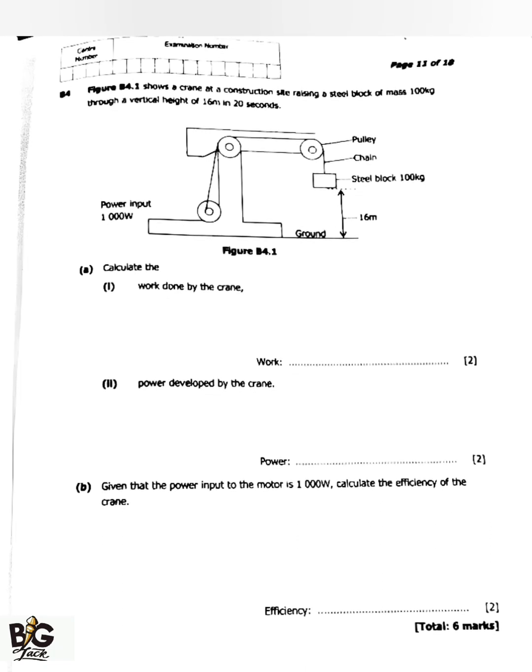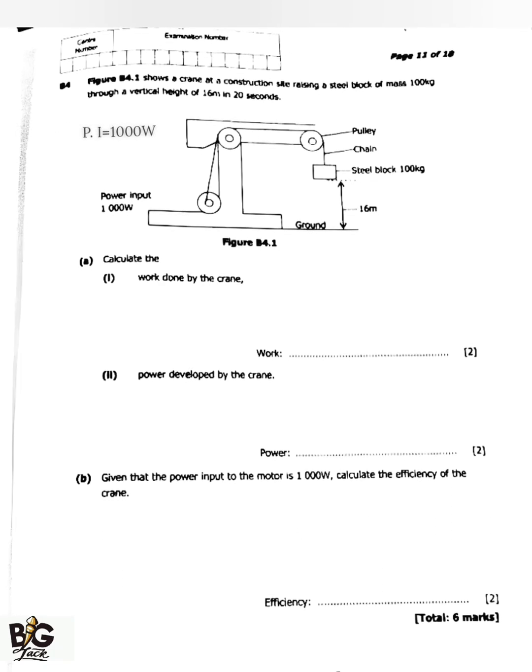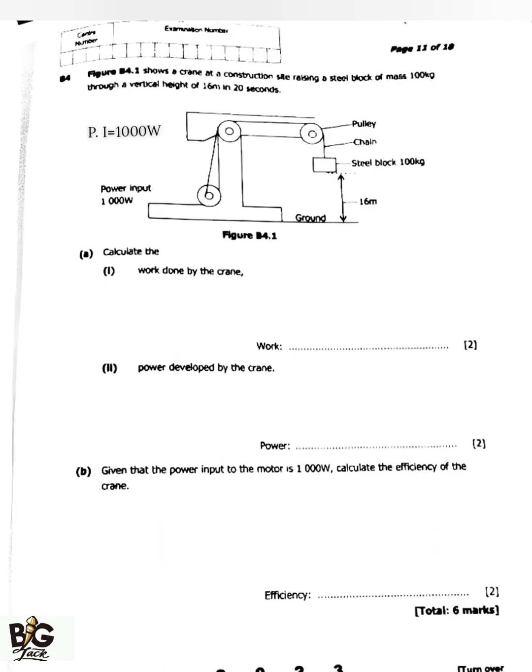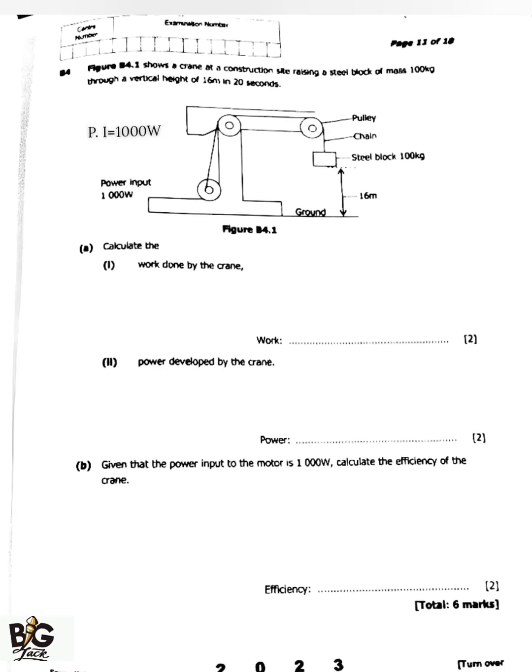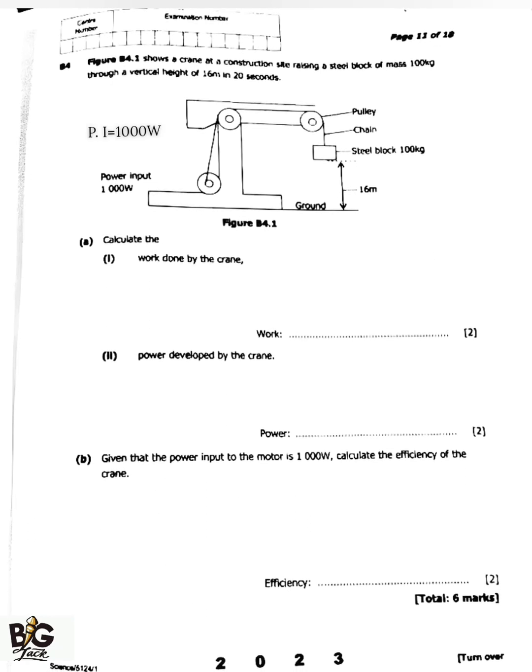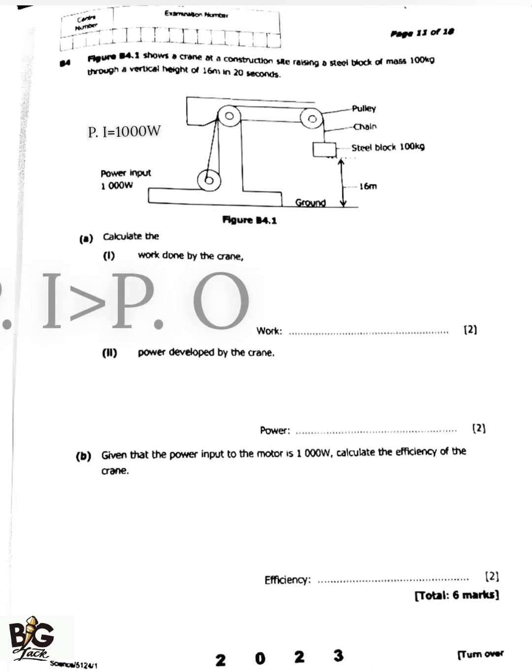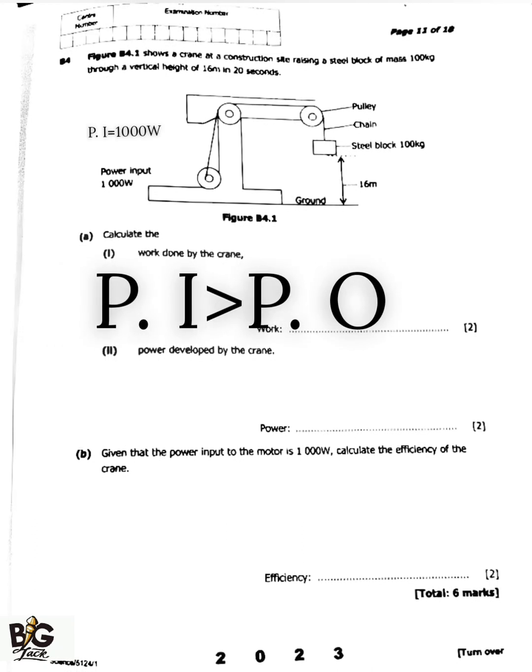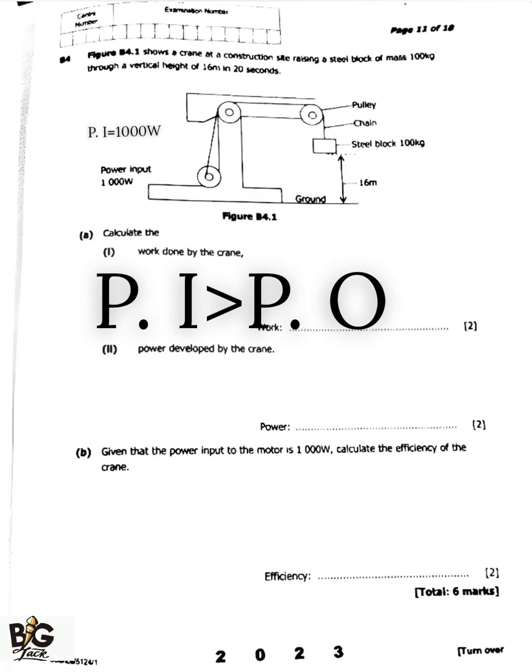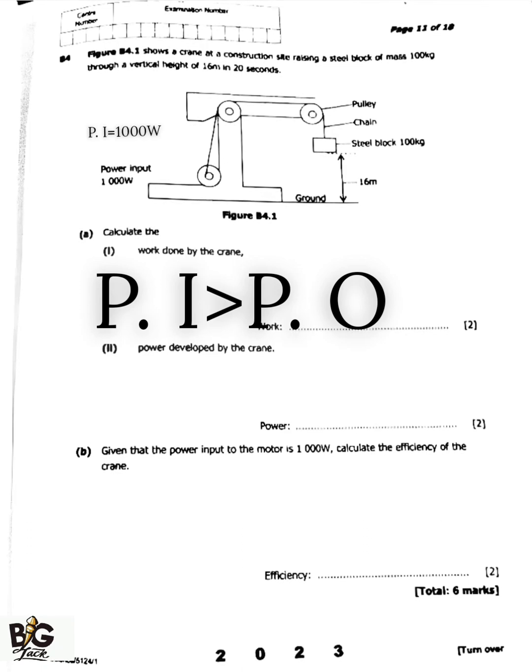The power input here is 1000 watts. What you need to understand is that power input is greater than power output due to friction.